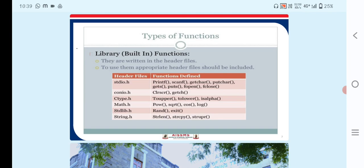First is stdio.h header file and the functions defined are printf, scanf, getch, putch, gets, puts, fopen and fclose.